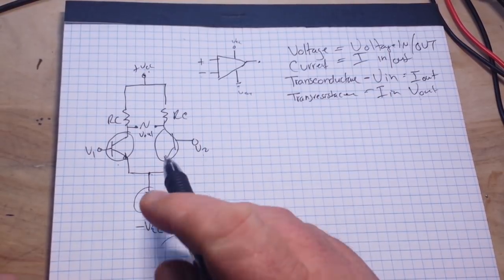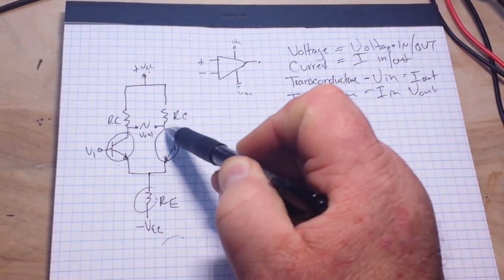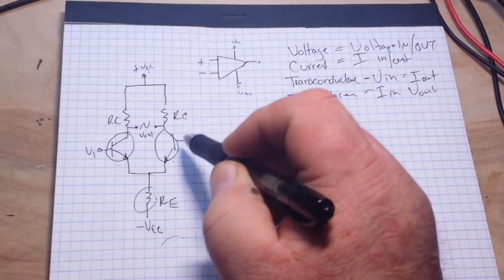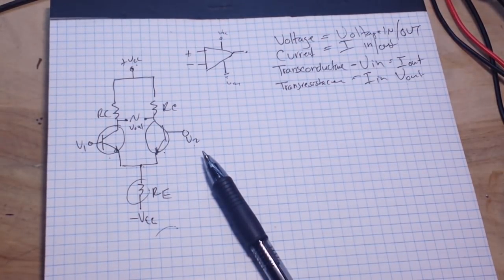In this case, if these two transistors are perfectly matched, or as close to perfectly matched as possible, then the current flowing through our common emitter resistor will remain constant at all times.